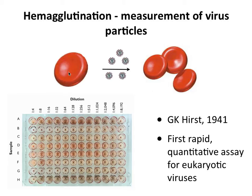Red blood cells will bind influenza viruses. A single red blood cell will be coated by influenza virus particles, and that red blood cell will then bind to others by virtue of the virus particles on its surface, forming a lattice that produces a very nice sheet in a 96-well format.